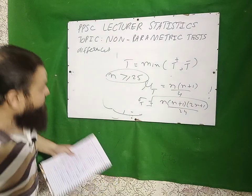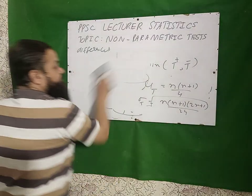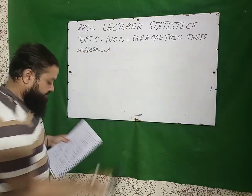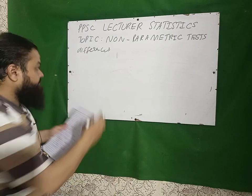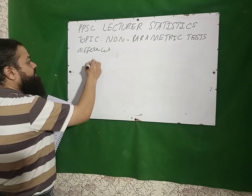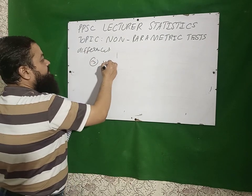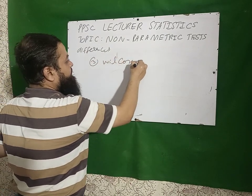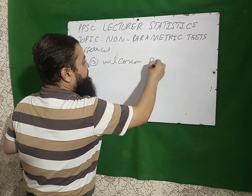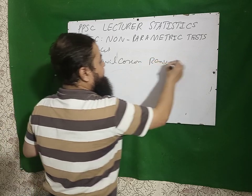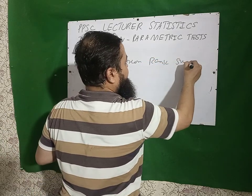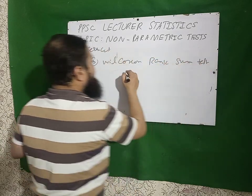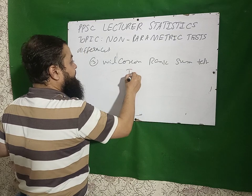The next test is the Wilcoxon Rank Sum Test — number three. Its test statistic is R.